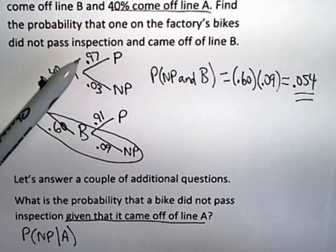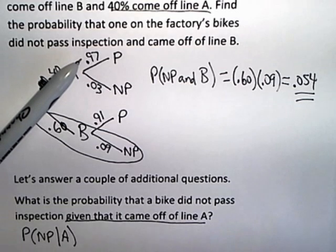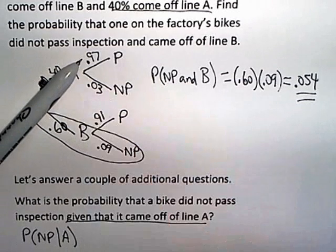I've already known that I've gone down branch A, so I don't have to consider that anymore. That's already happened. Given that's happened, the probability that the bike does not pass inspection is 0.03.